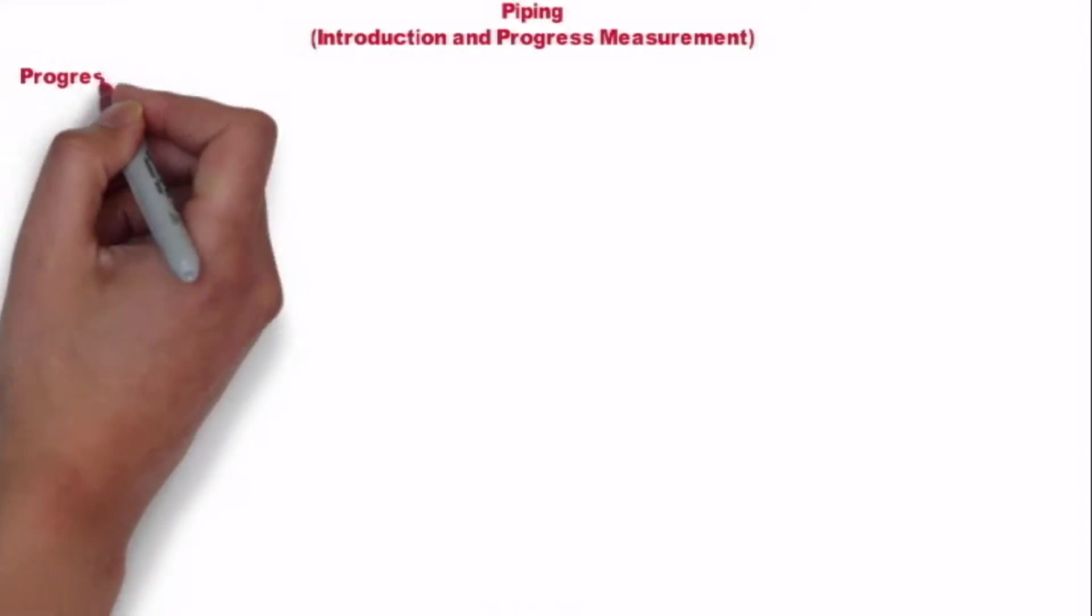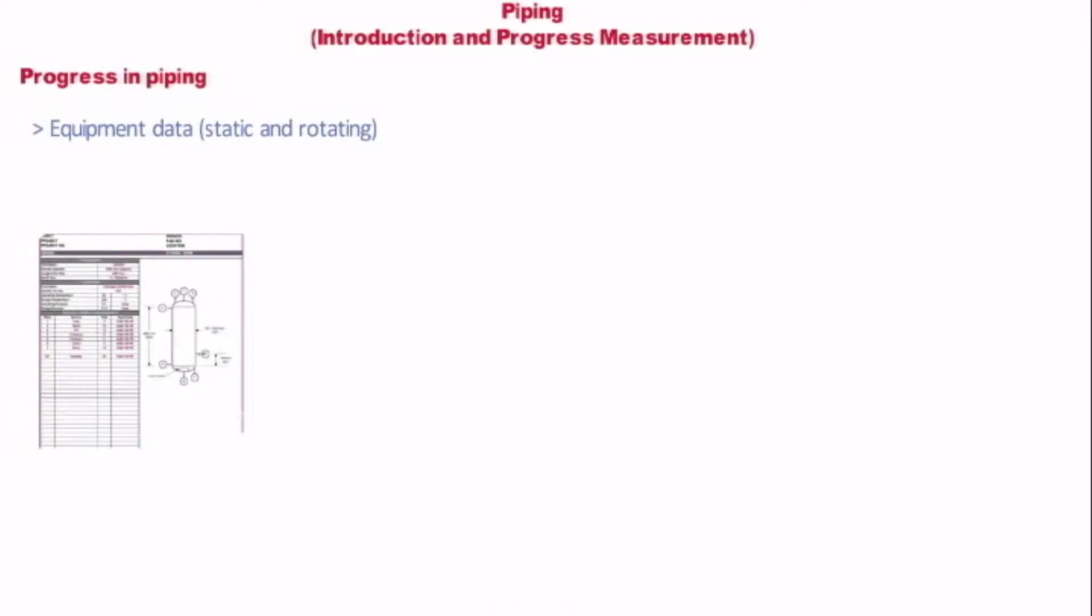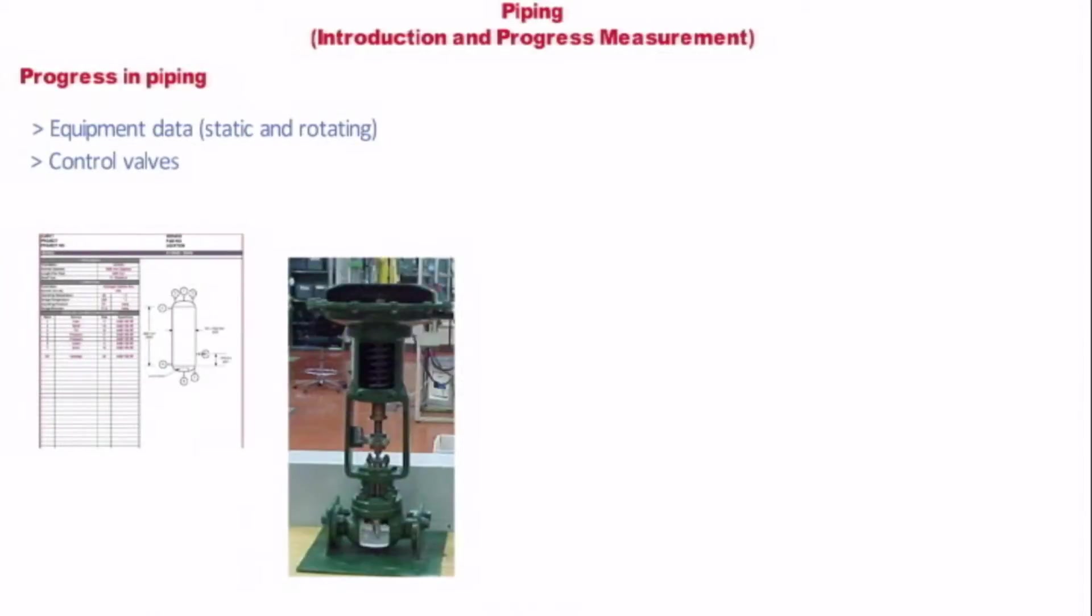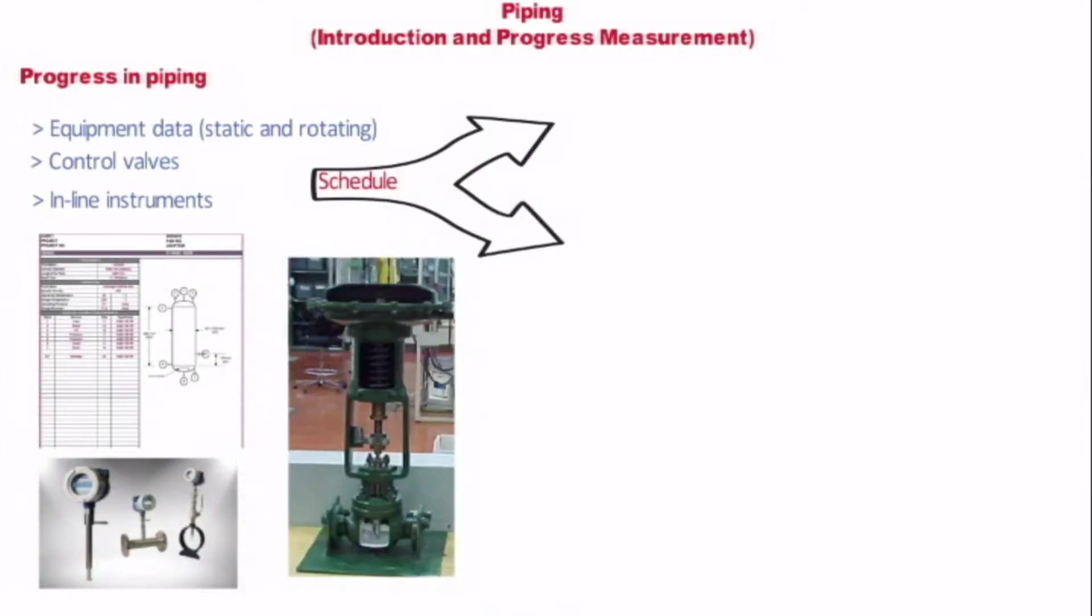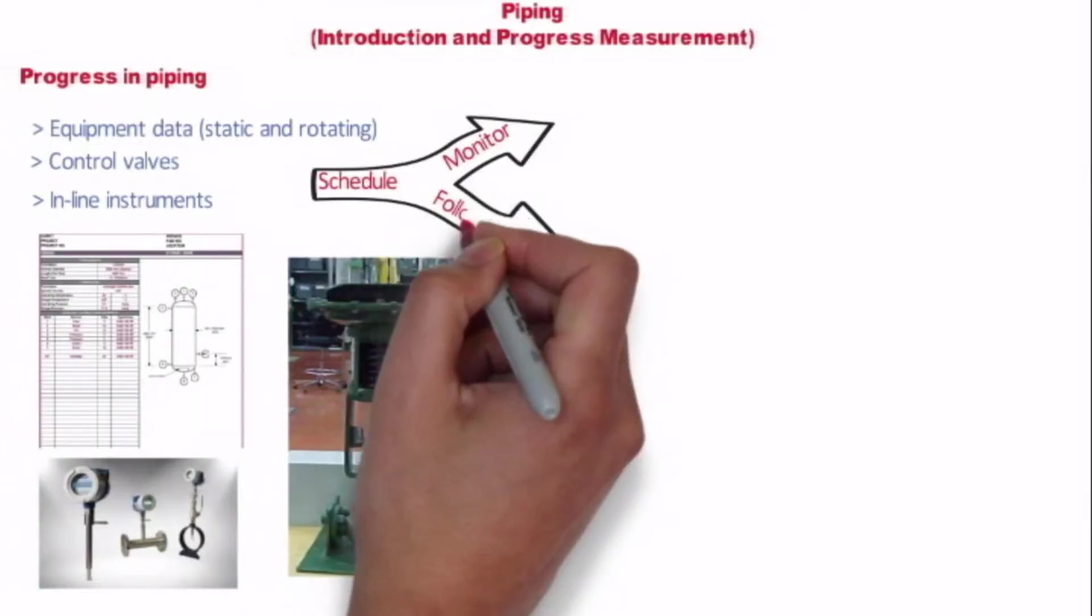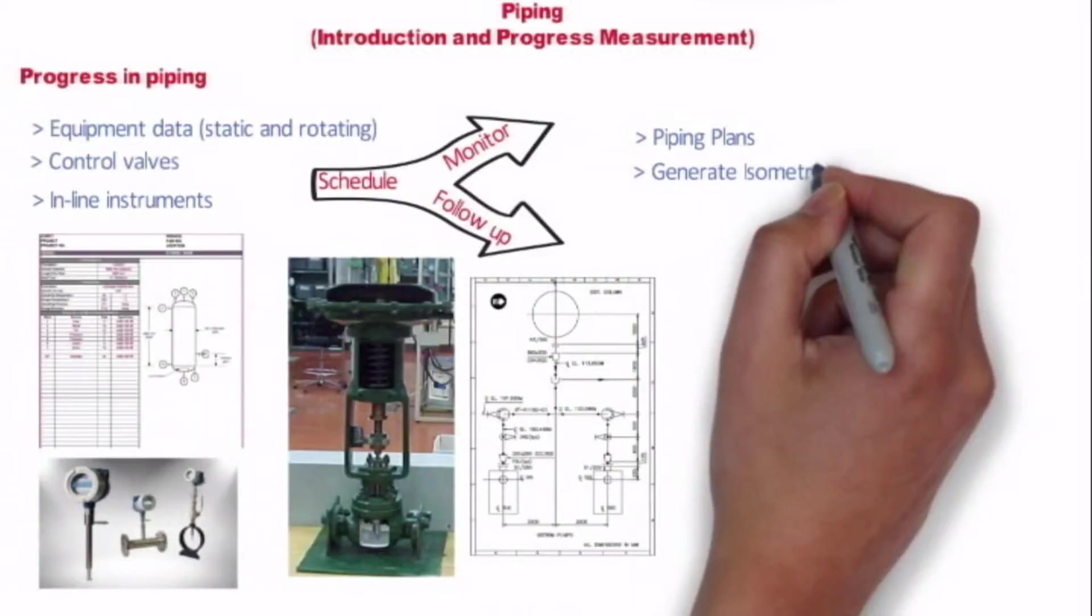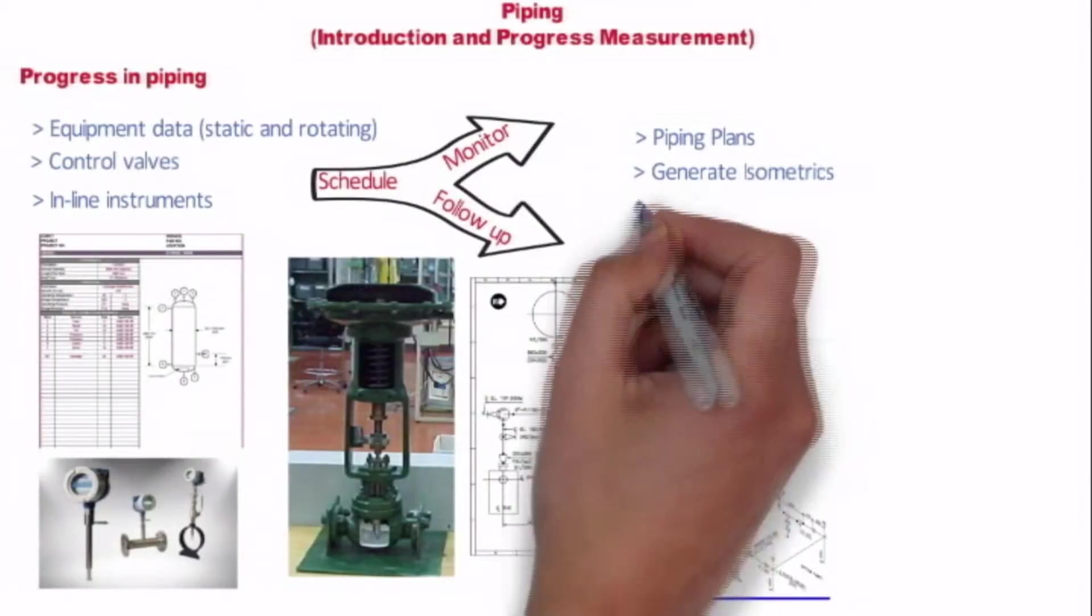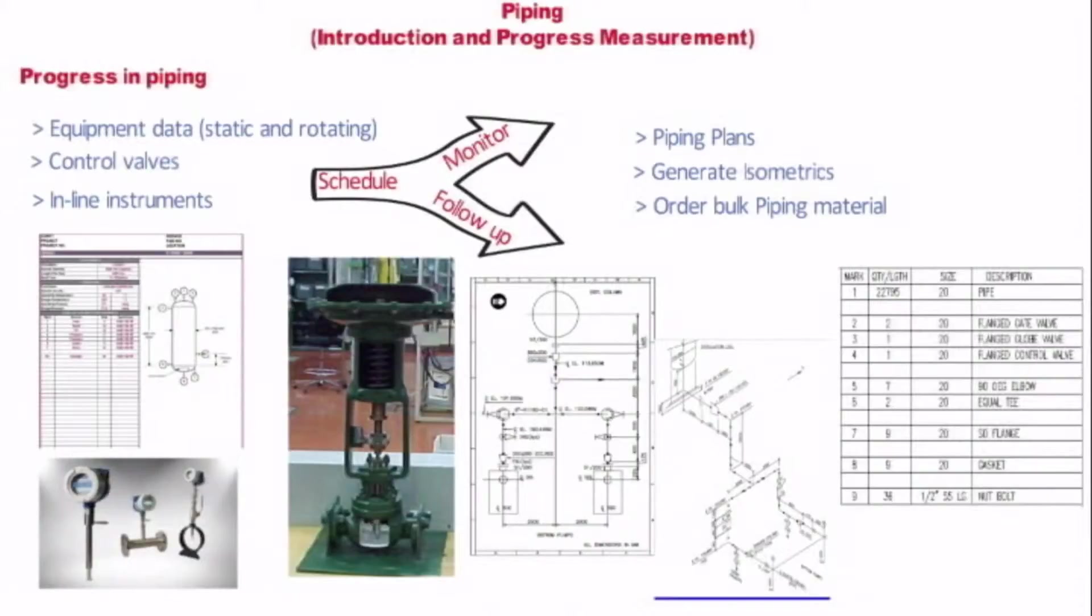Progress in piping engineering is very much dependent upon the feedback of equipment data, either it is static or rotating control valves and other inline instrument items. A close monitoring of the schedule of order for these equipment and follow-up with vendor for data and drawing is required to finalize piping plan, generate isometrics, order bulk piping material as well as piping special items and release drawing to site for speedy construction and thus facilitate prompt startup.